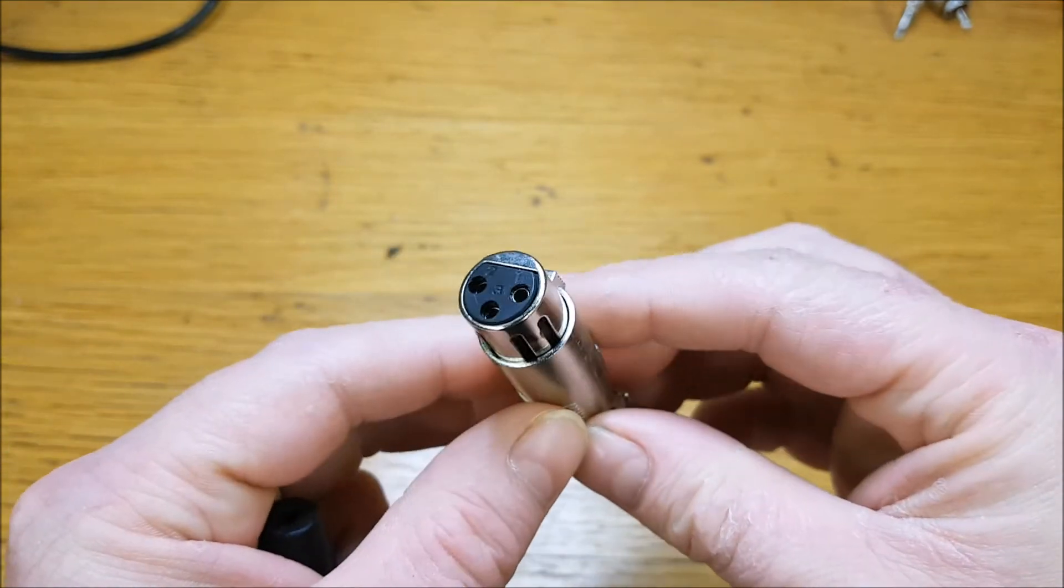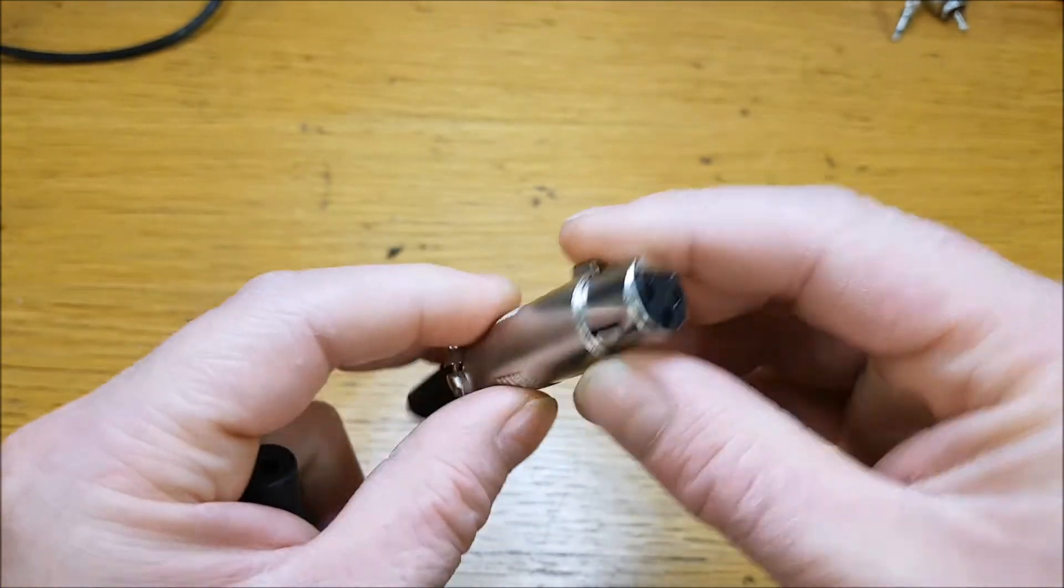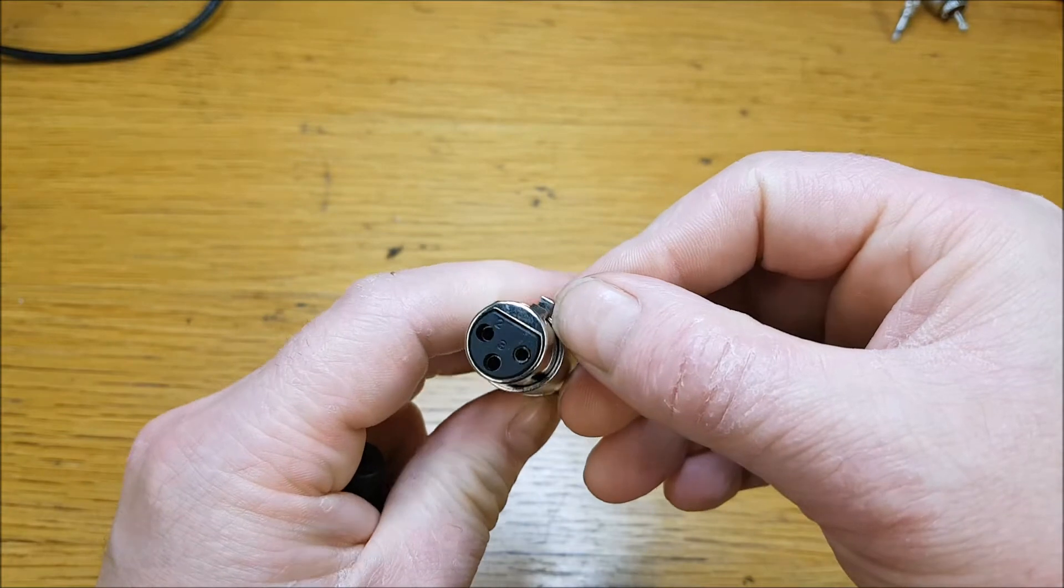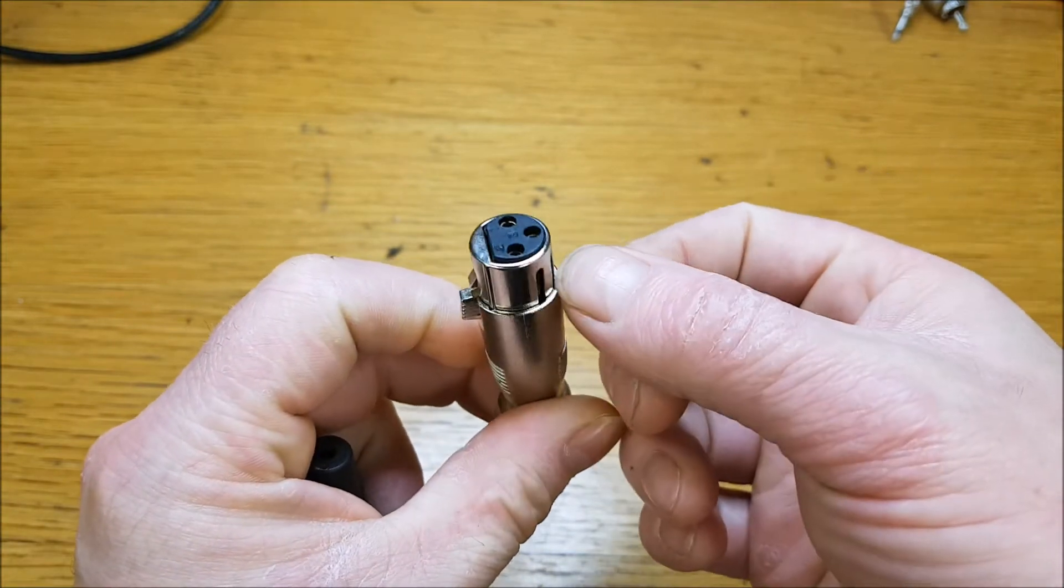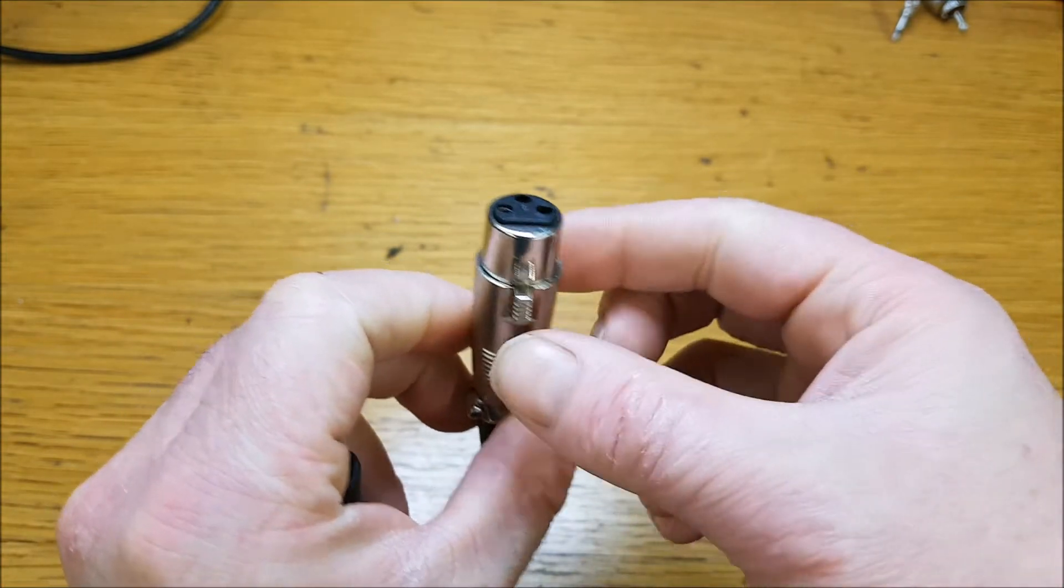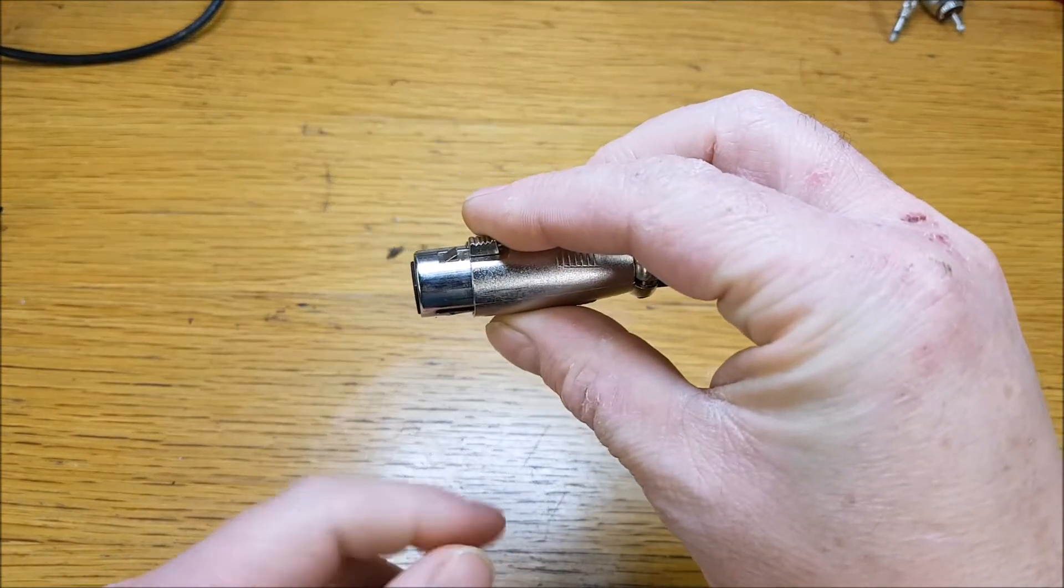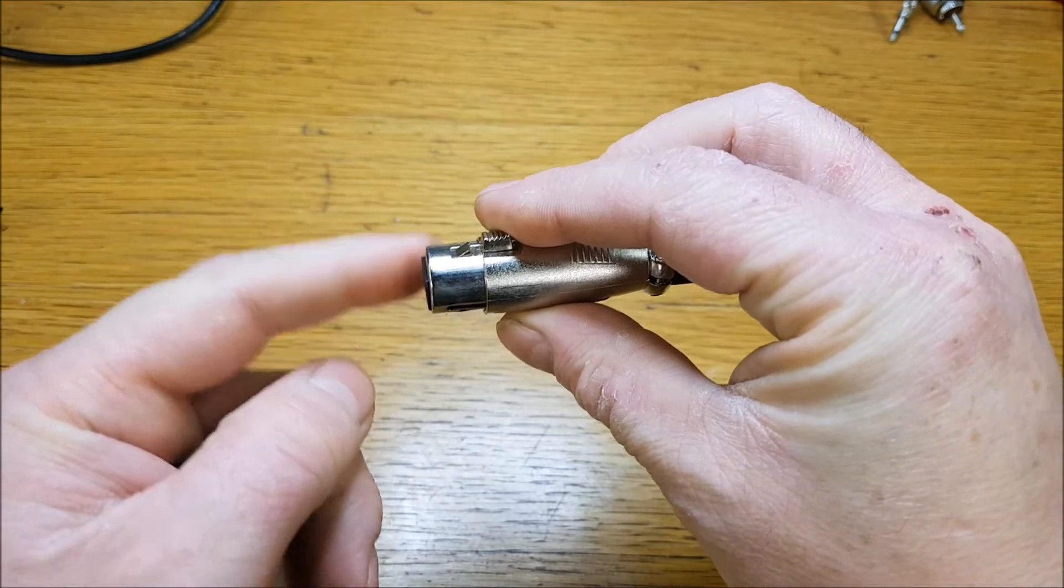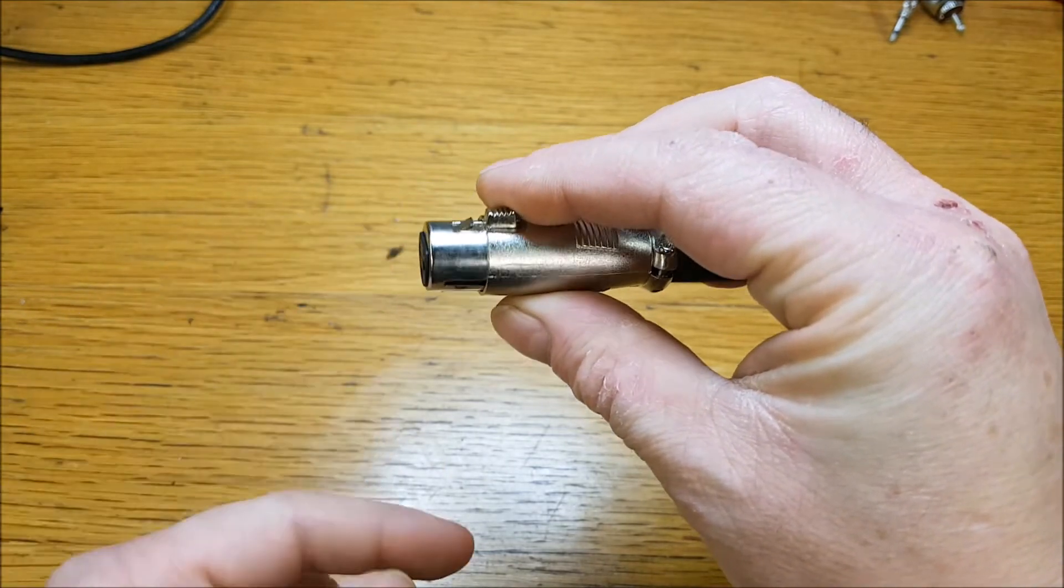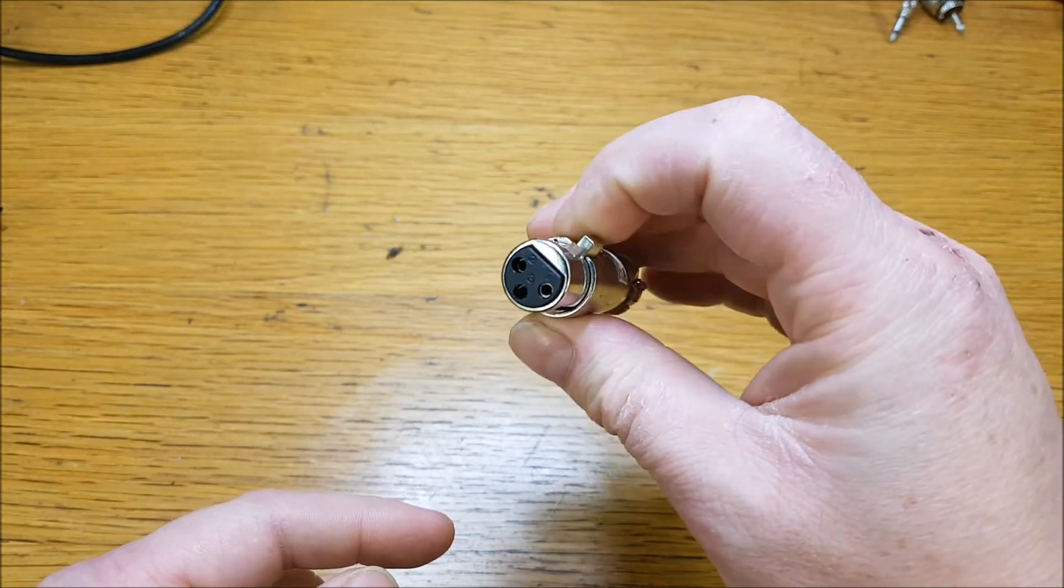But if you were to look at a Neutrik one - I don't actually have one here - but a Neutrik connector would have a rubber ring around here, which is where the R comes from. And the idea of that is when it's plugged in, the ring seals around the socket where it's plugged in to keep any dirt or dust out.